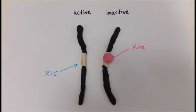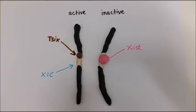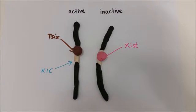Xist in pink is up-regulated on the future inactive X chromosome and down-regulated on the future active X chromosome. Tsix shown in brown is the antisense transcript of Xist and is up-regulated on the active chromosome, working to repress Xist on the active X.